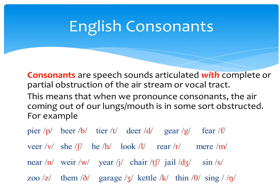What are the consonants? Consonants are speech sounds articulated with complete or partial obstruction of the airstream or vocal tract. This means that when we pronounce consonants, the air coming out of our lungs or mouth is in some way obstructed. For example, we say 'fear', 'bear', 'tear', 'deer', 'gear'. When we say 'gear', we obstruct the air for some time and then release it. When we say 'fear', we obstruct the air to pronounce the first sound.